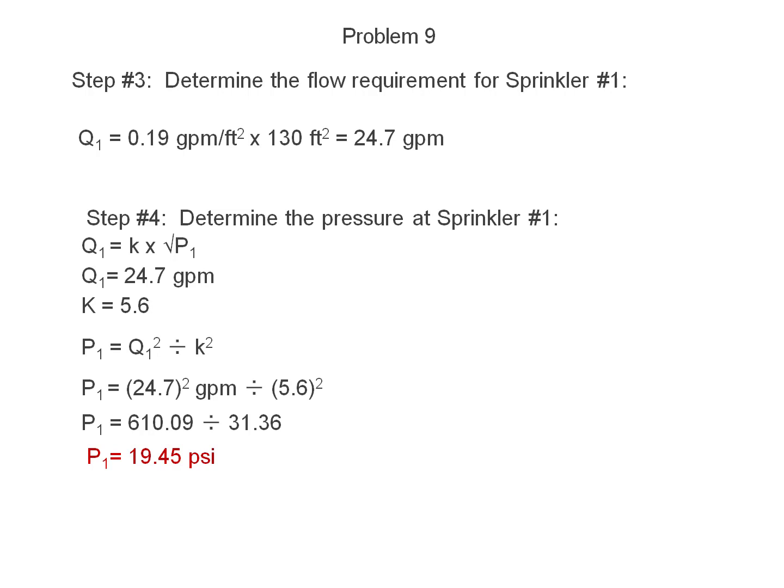Next, determine the pressure at sprinkler number 1. Q1 is equal to K times the square root of P. Q1 is equal to 24.7 gallons per minute. K factor is equal to 5.6. P1 is equal to Q1 squared divided by K squared. P1 is equal to 24.7 squared divided by the K factor of 5.6 squared. P1 is equal to 610.09 divided by 31.36. P1 is equal to 19.45 PSI.